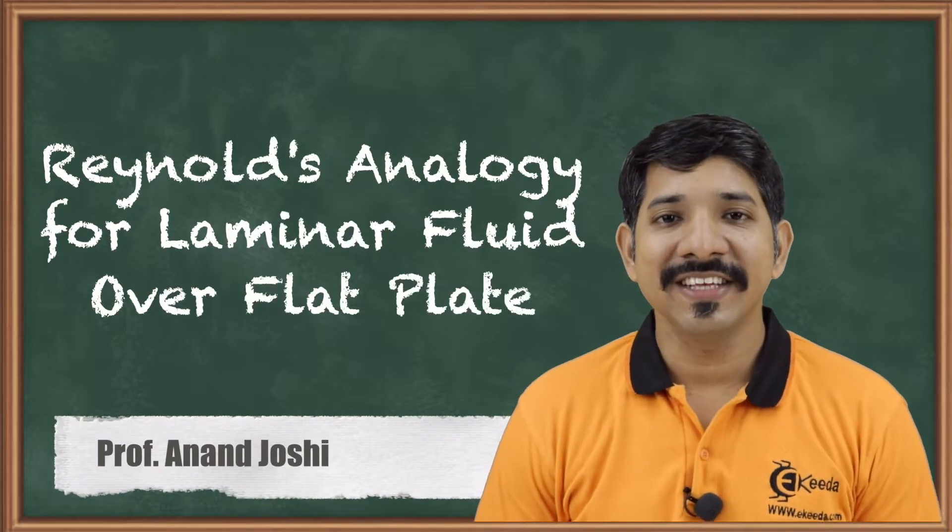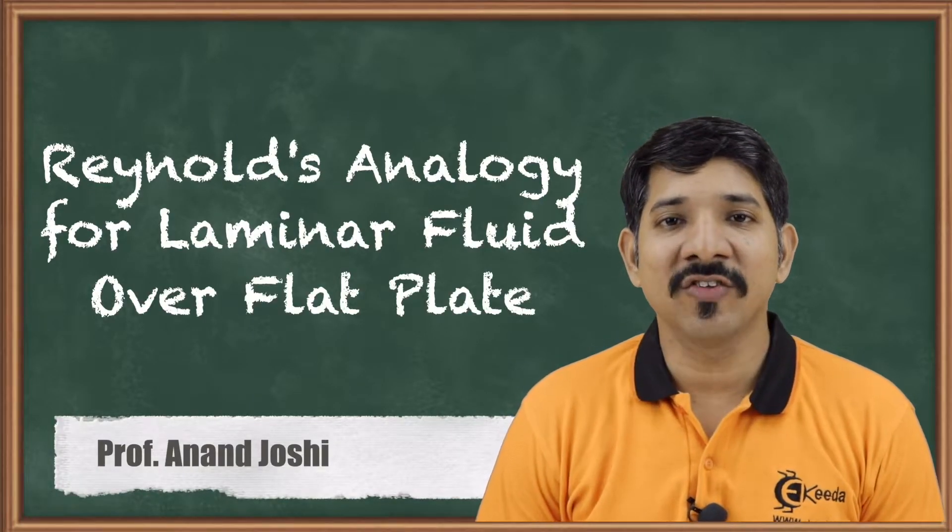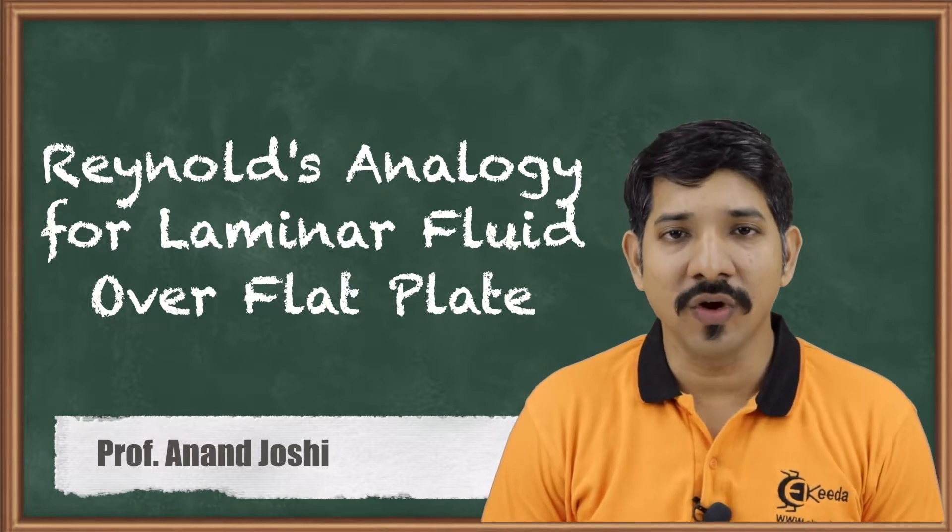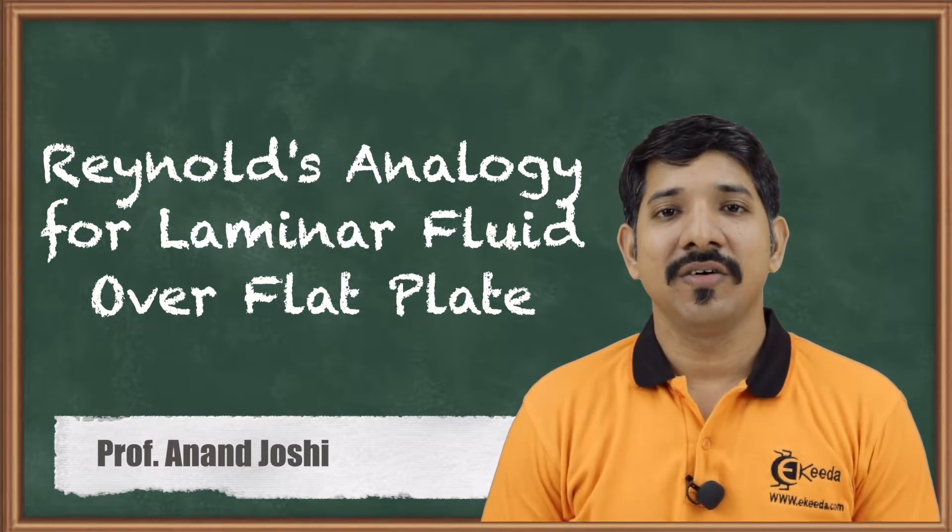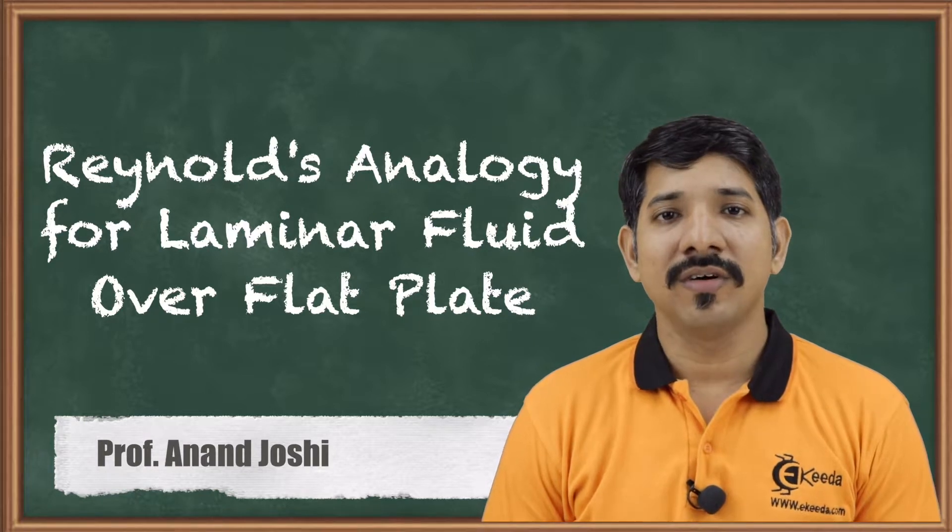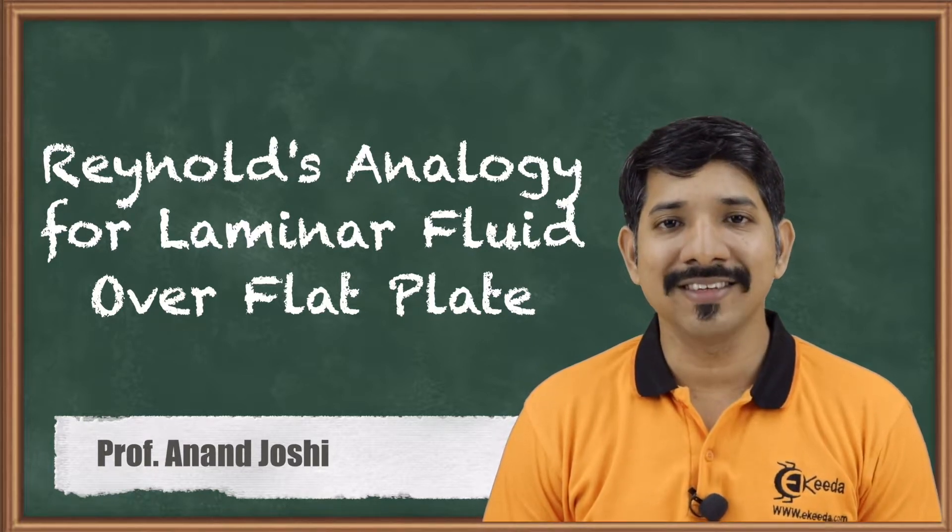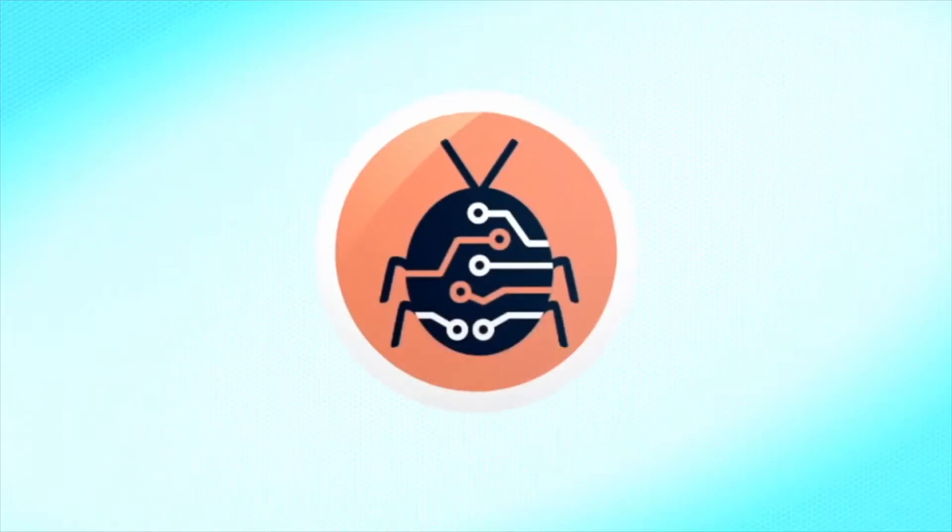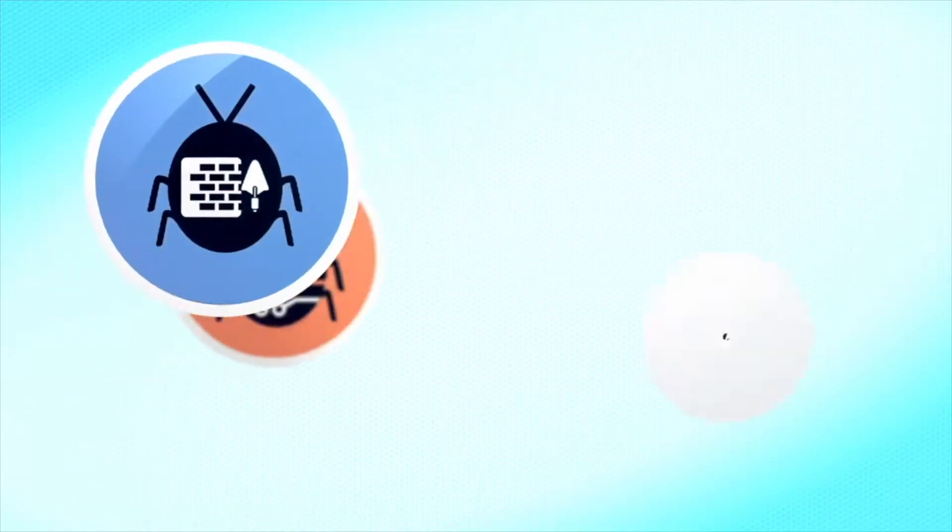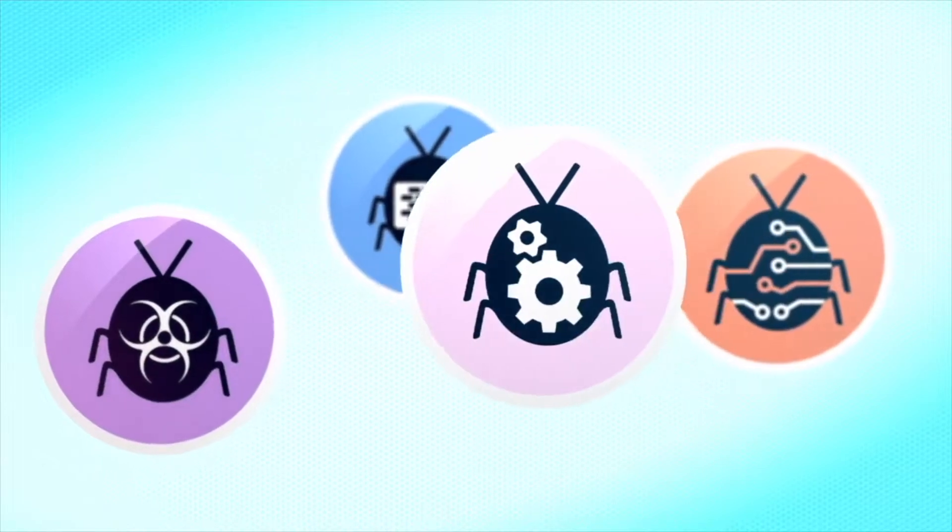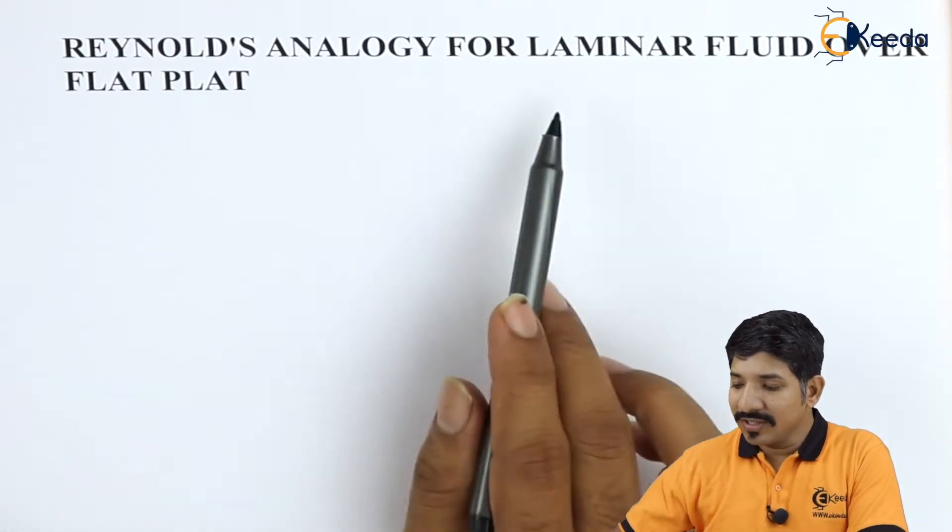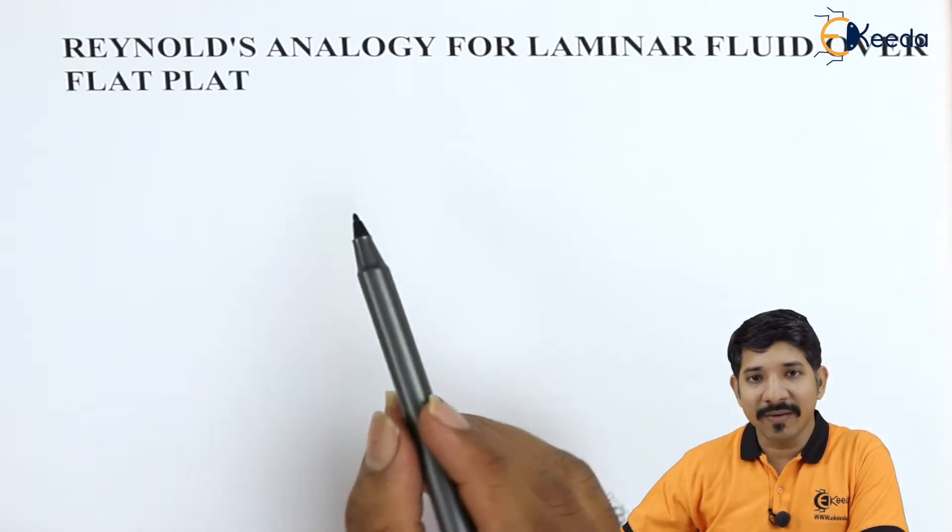Hello friends. We have seen that in case of an analysis of convection, the role of non-dimensional numbers and various correlation shifts are essential. One other method of finding the analysis or doing the analysis is by Reynolds analogy. Now, let us look at the Reynolds analogy for laminar fluid over a flat plate.